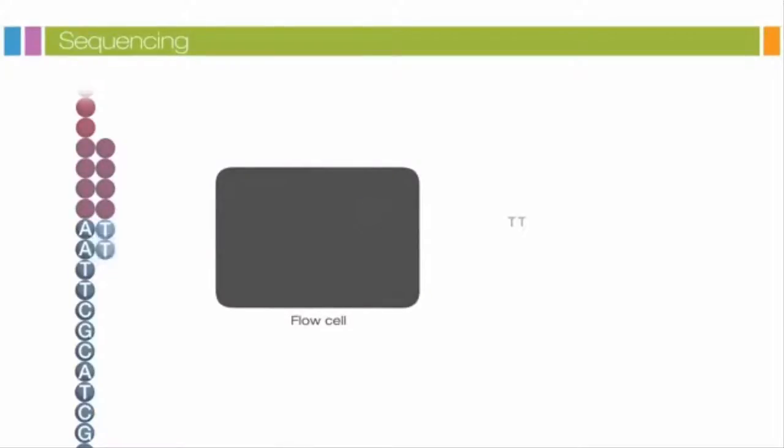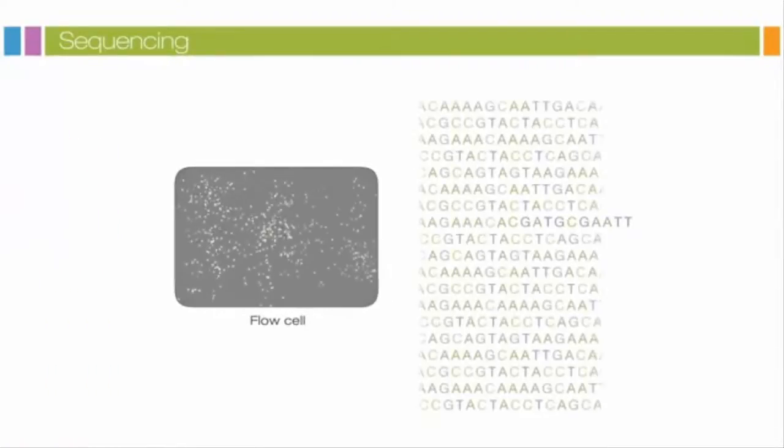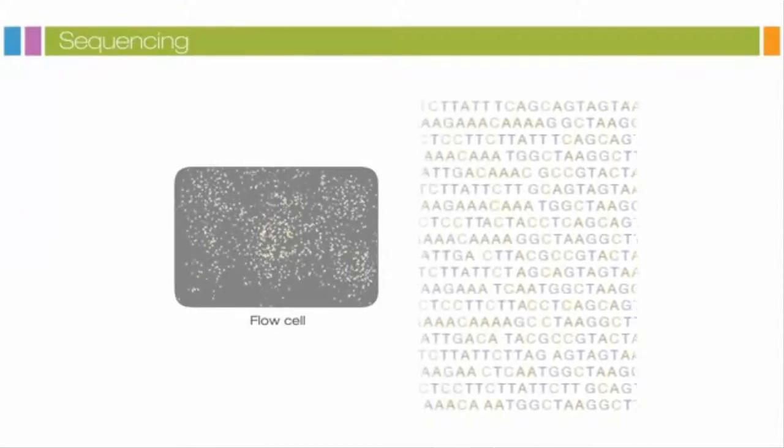Only one is incorporated based on the sequence of the template. After the addition of each nucleotide, the clusters are excited by a light source and a characteristic fluorescent signal is emitted. This proprietary process is called sequencing by synthesis. The number of cycles determines the length of the read. The emission wavelength, along with the signal intensity, determine the base call. For a given cluster, all identical strands are read simultaneously. Hundreds of millions of clusters are sequenced in a massively parallel process. This image represents a small fraction of the flow cell.